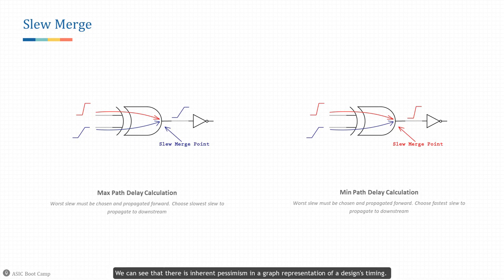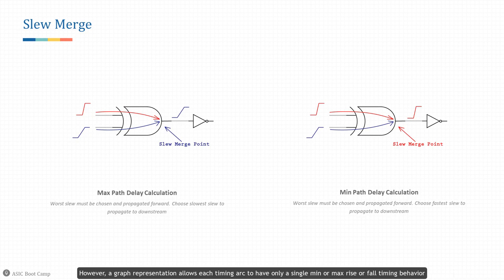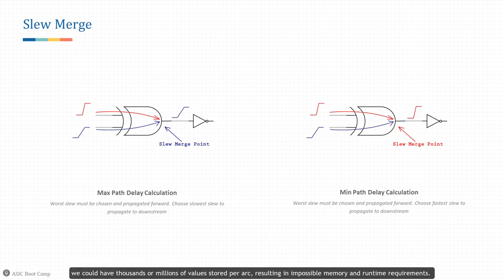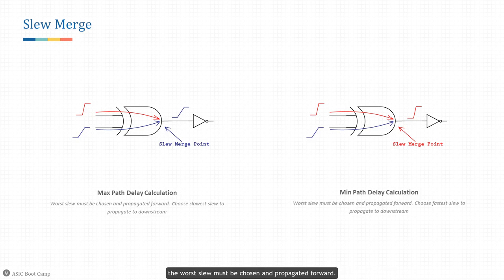There is inherent pessimism in a graph representation of a design's timing. For the real physical device, a timing arc can have multiple timing behaviors depending on the upstream logic that sources its transition. However, a graph representation allows each timing arc to have only a single min or max rise or fall timing behavior. If we tried to store a value for every possible upstream path, we could have thousands or millions of values stored per arc, resulting in impossible memory and runtime requirements. To ensure the min/max graph values always bound the fastest and slowest possible timing, the worst slew must be chosen and propagated forward.